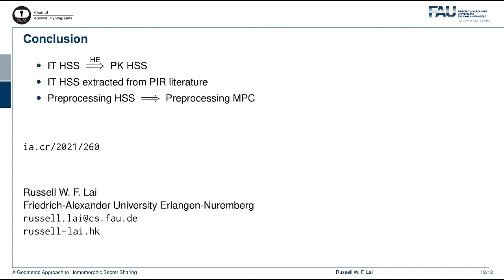To conclude, in this work we have presented three results. First, we have constructed a generic compiler based on homomorphic encryption, compiling IT-HSS schemes to public key HSS schemes for polynomials. Second, we have extracted IT-HSS schemes from existing PIR literature. And finally, we show how preprocessing HSS can be used to construct preprocessing MPC. An e-print version of this work can be found at ia.cr/2021/260.